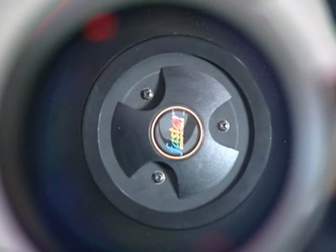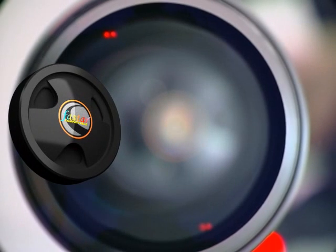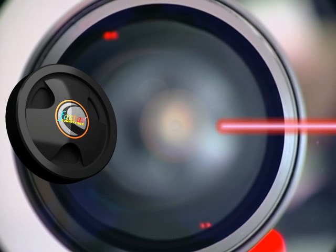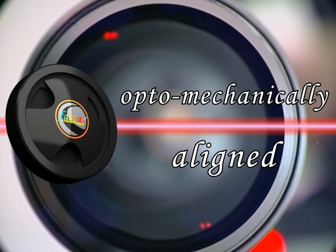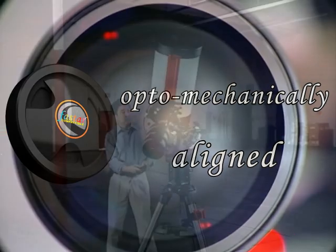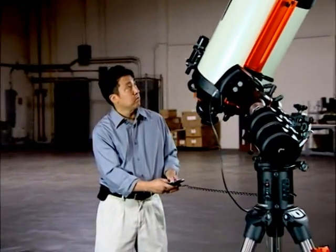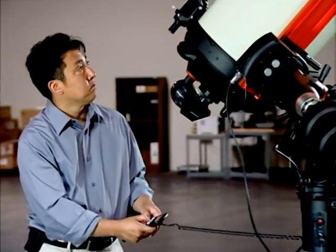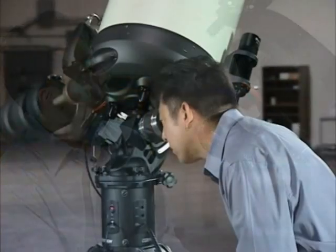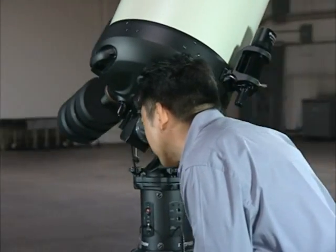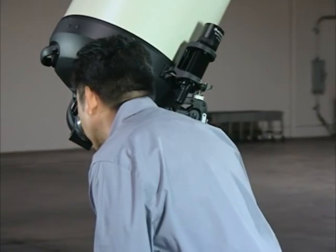Each tube has been fitted with a removable secondary mirror. All components are optomechanically aligned on a laser bench to ensure they are axially symmetric in any configuration. With precision machined mechanics and a spherical secondary mirror, Edge HD optical telescopes can be collimated accurately and easily to guarantee that the optics perform to their full potential every time you use them.